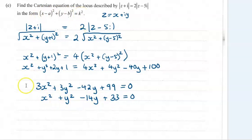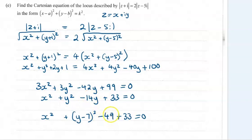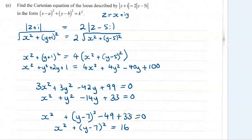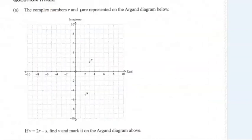Now we want to put it in the required form by completing the square. The x part has no singular x, so it stays as x squared. For the y part, we need to do y minus half the coefficient of y, then take away the square of that — y minus 7, take away 7 squared, then add the 33 back on. Tidy this up and you've got the equation in the required form, where k would have been 4.